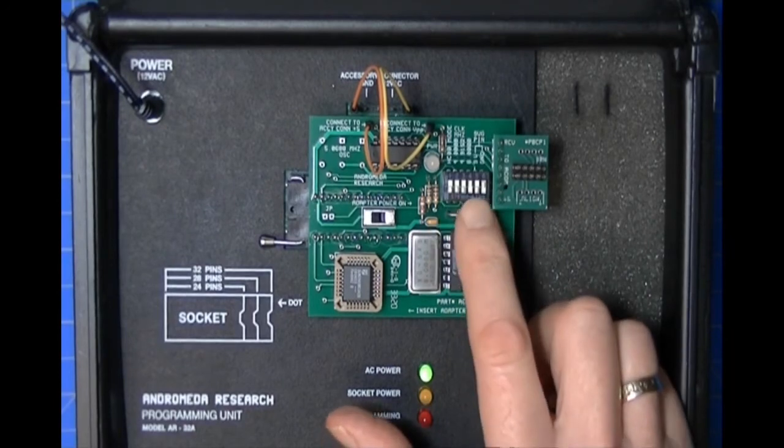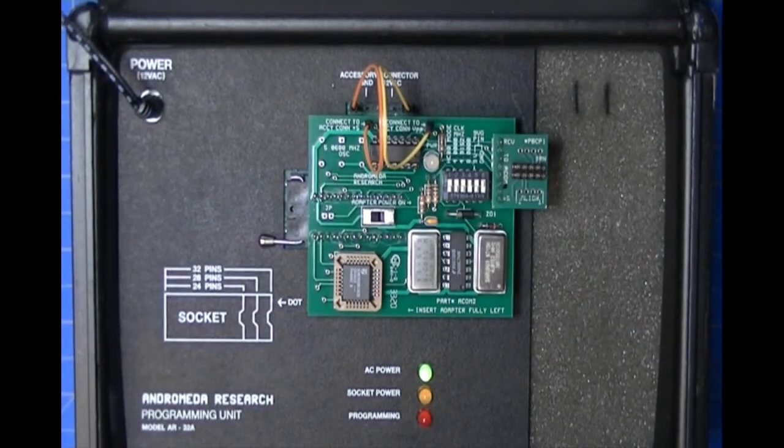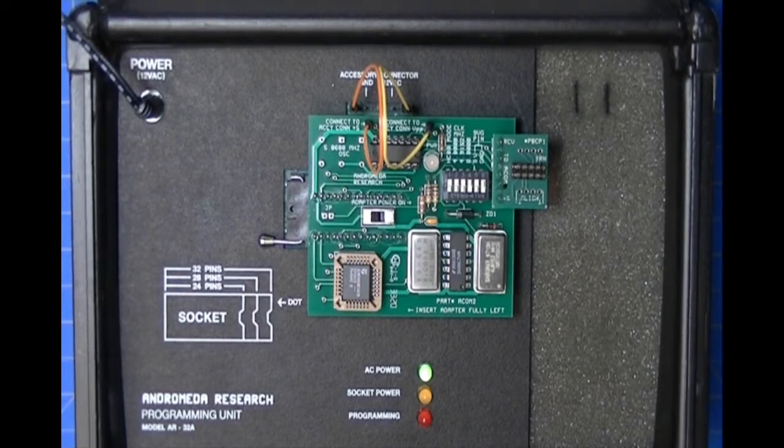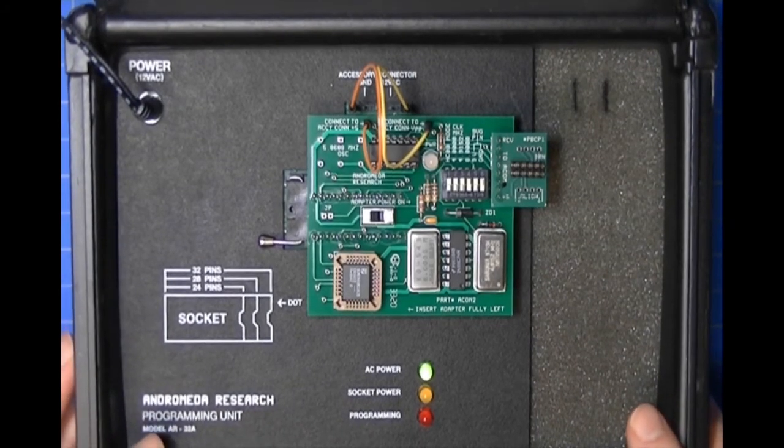Also, the ACOM 2 has a DIP switch on it, a configuration switch right here. Depending upon the part that you select, whether you're working with a Twice module or whatever, the software will show you how to set the switches on the ACOM 2 so it'll be set correctly for your device.